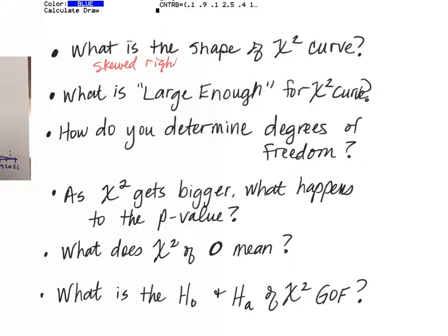Now, because it is not normal or not even nearly normal, why is it skewed right? Because it's got to be greater than zero. Since all of the chi-squared values are positive, they'll start at zero and go all the way out to positive infinity.